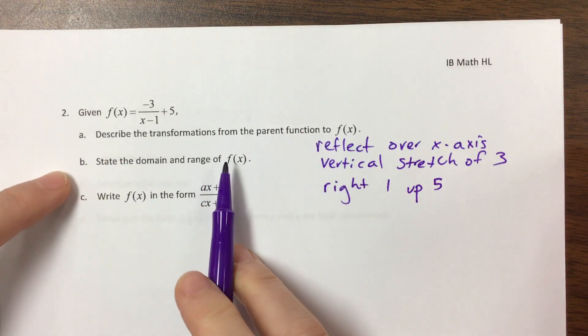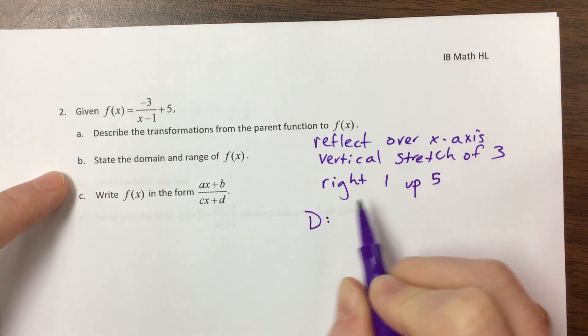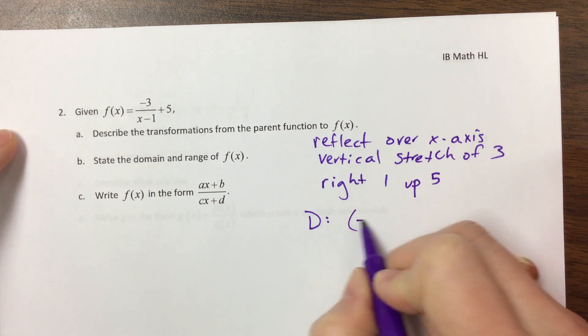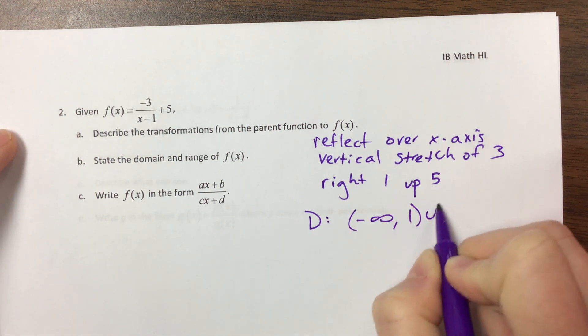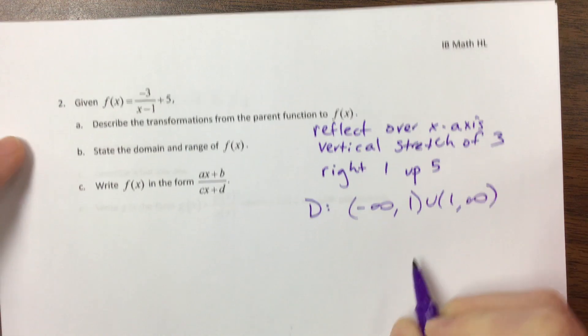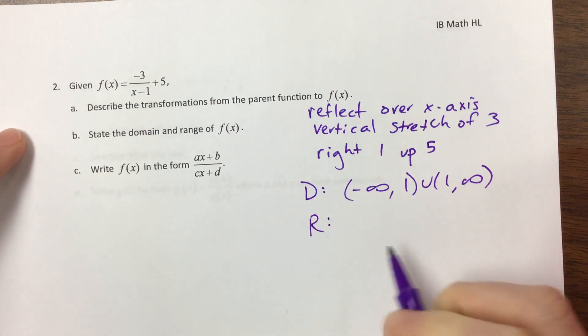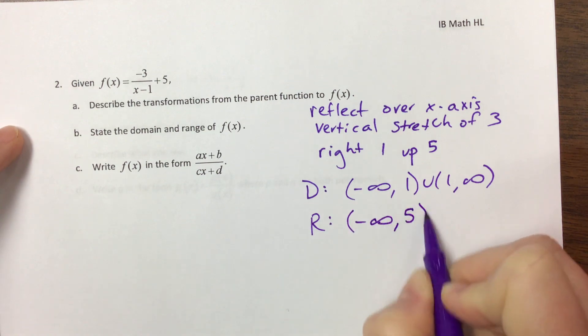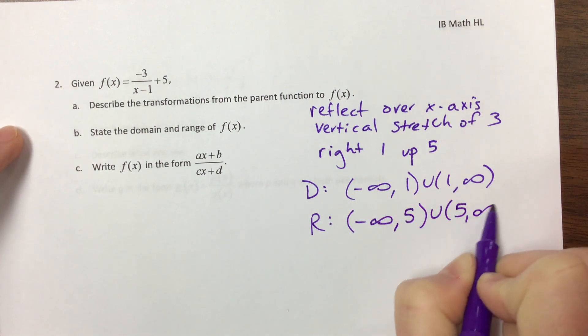Okay, and so my domain and range, well, I used to have an asymptote at x equals 0, and now it's going to be at x equals positive 1. I used to have an asymptote at y equals 0, but that's gone up 5.